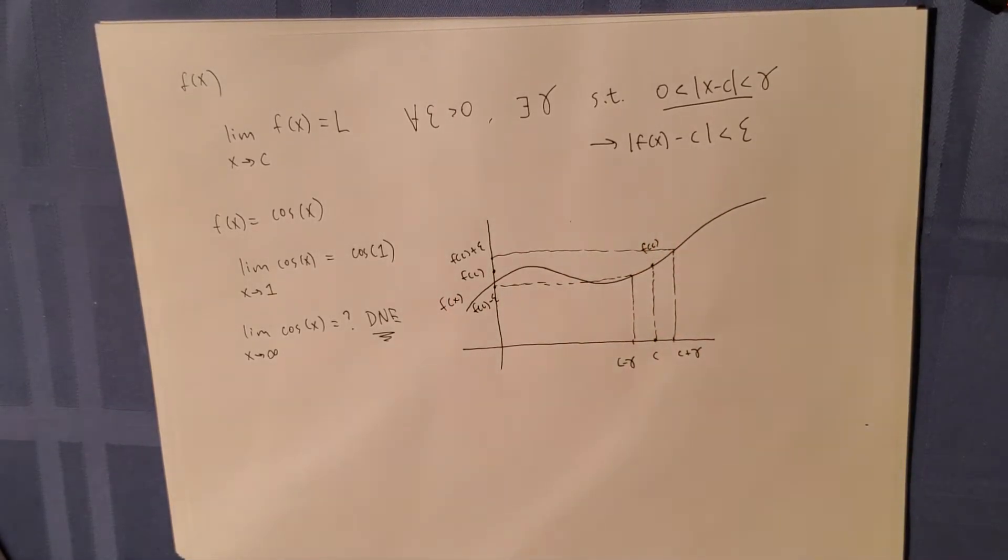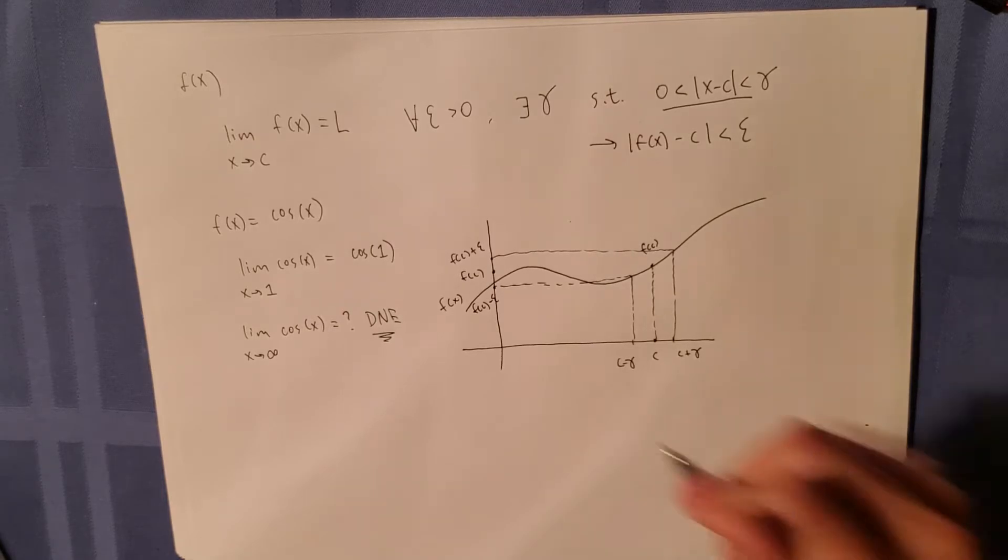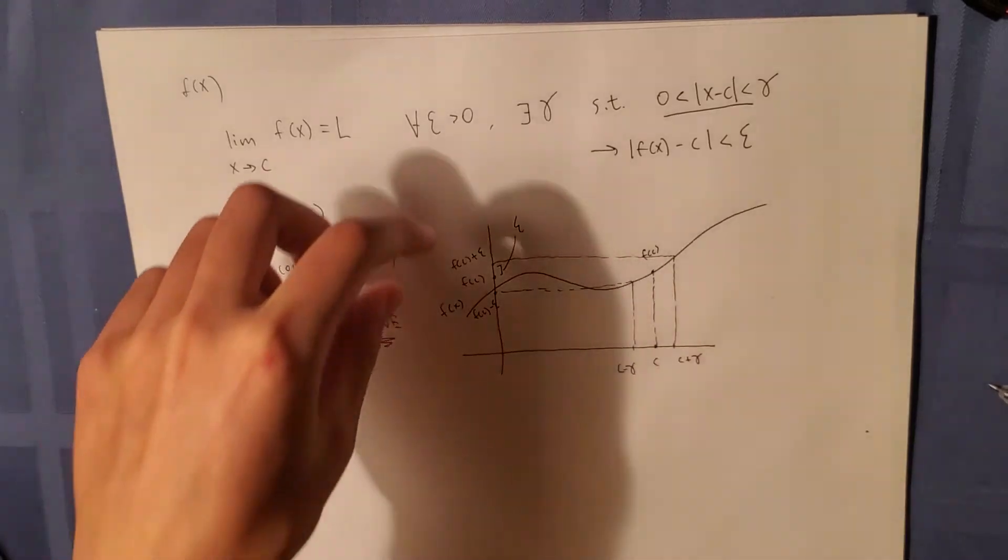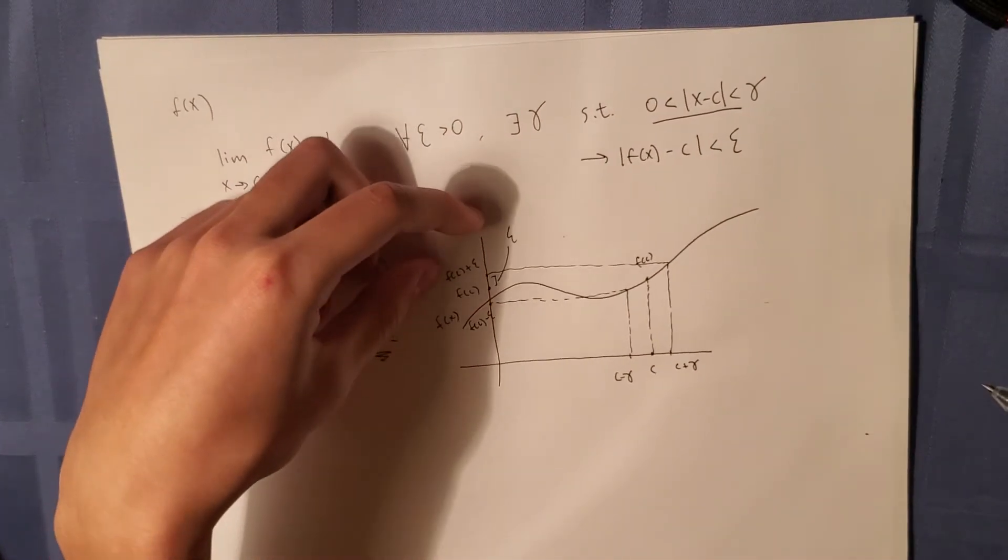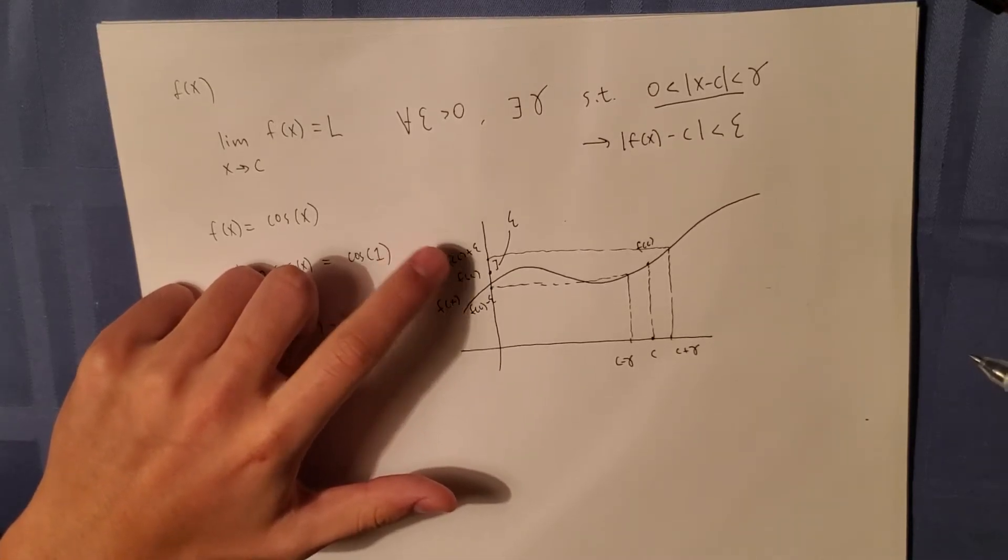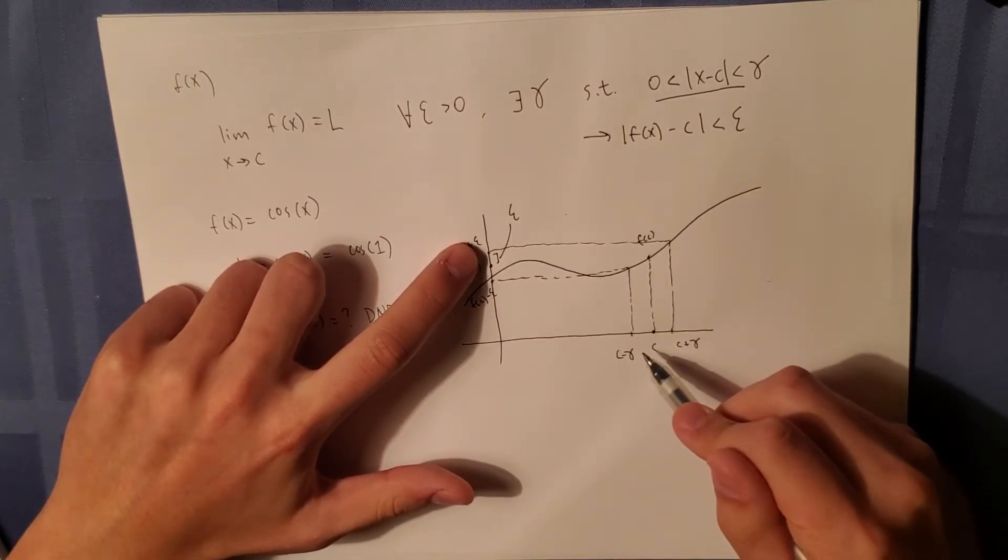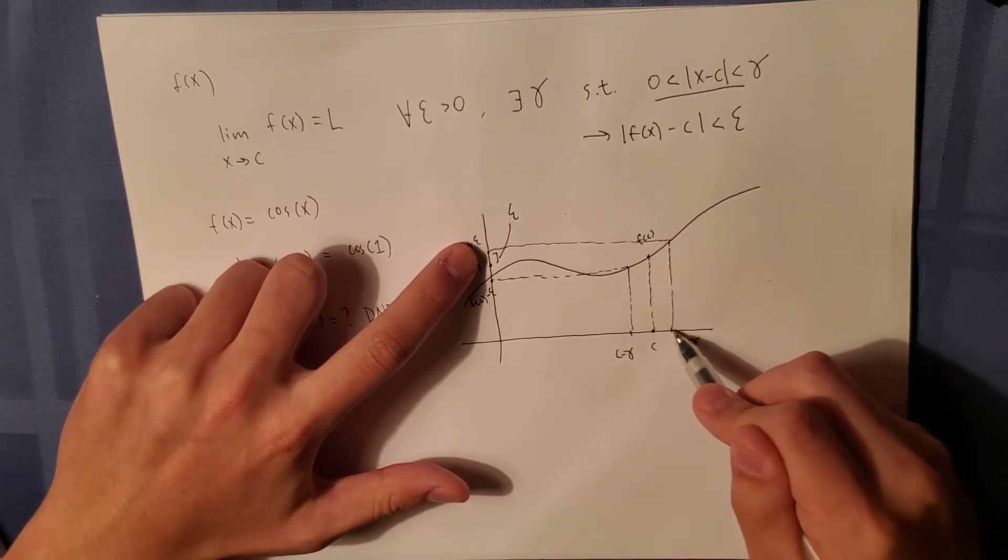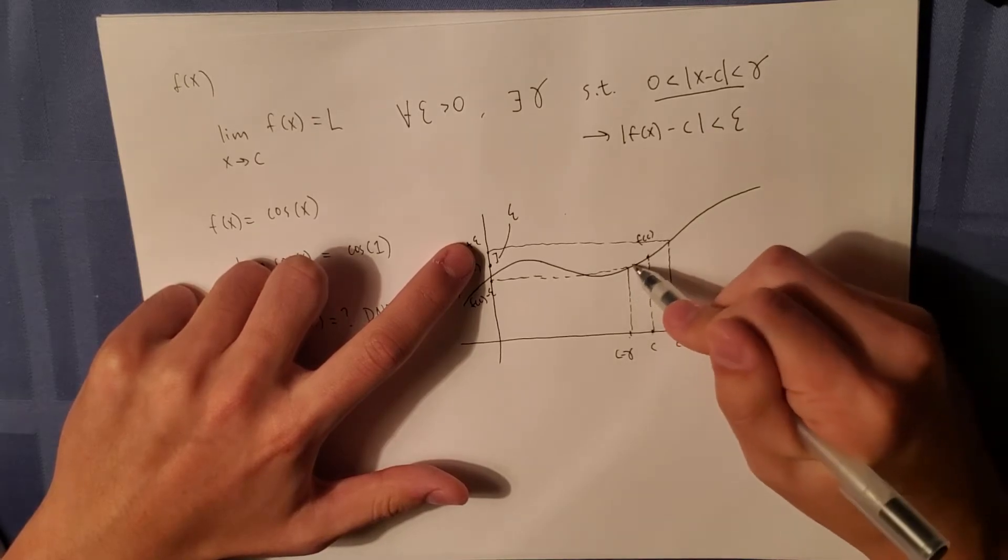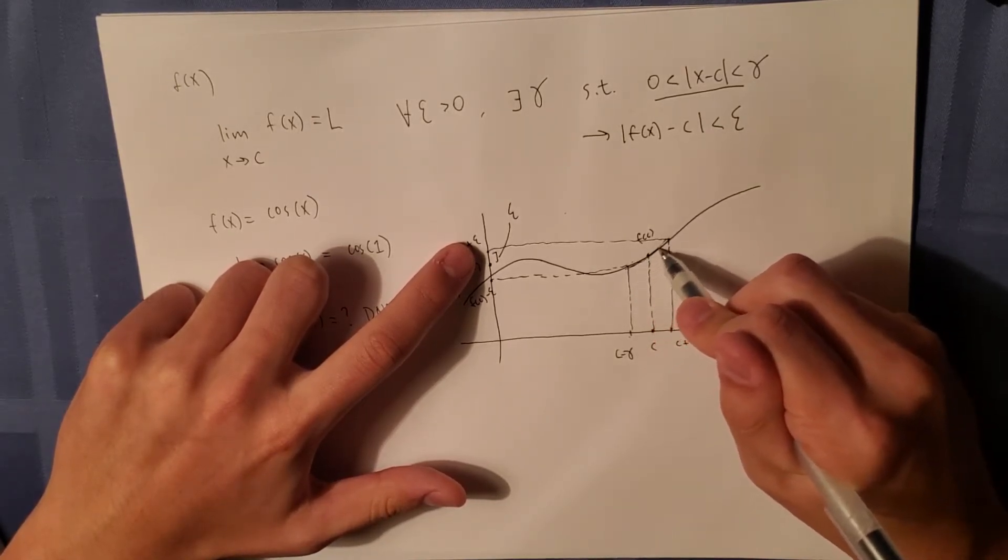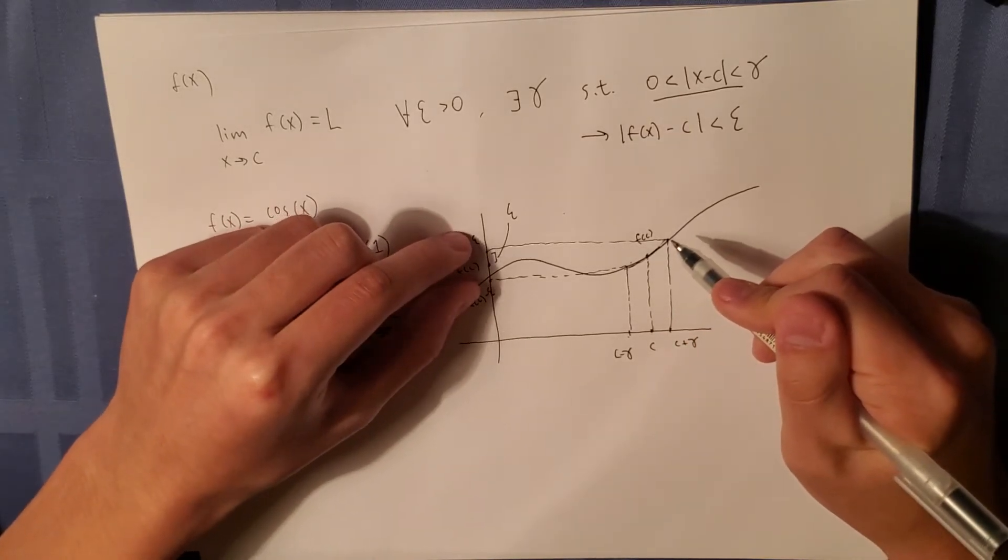So what we're saying is, as this interval epsilon, for however small of an epsilon here we have, we're saying that no matter what, we will be able to find a delta bounded around c such that these values between them here will lie within this epsilon bound.